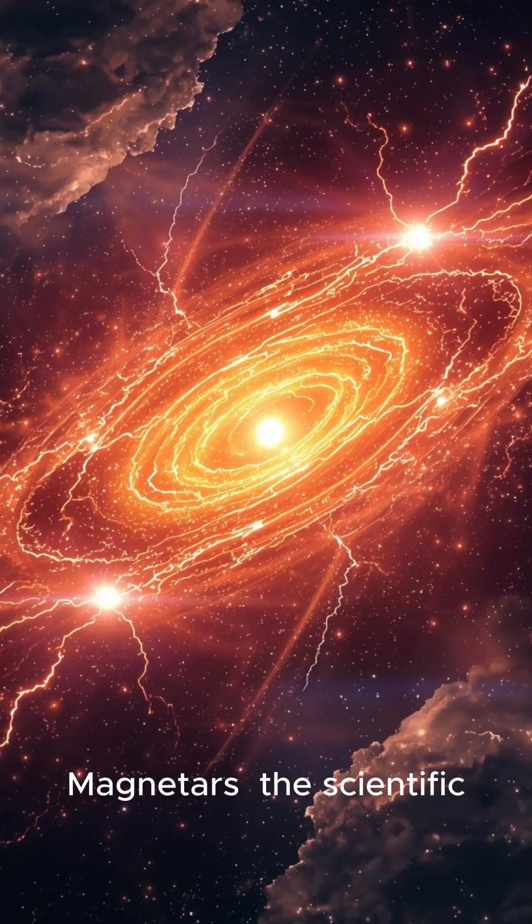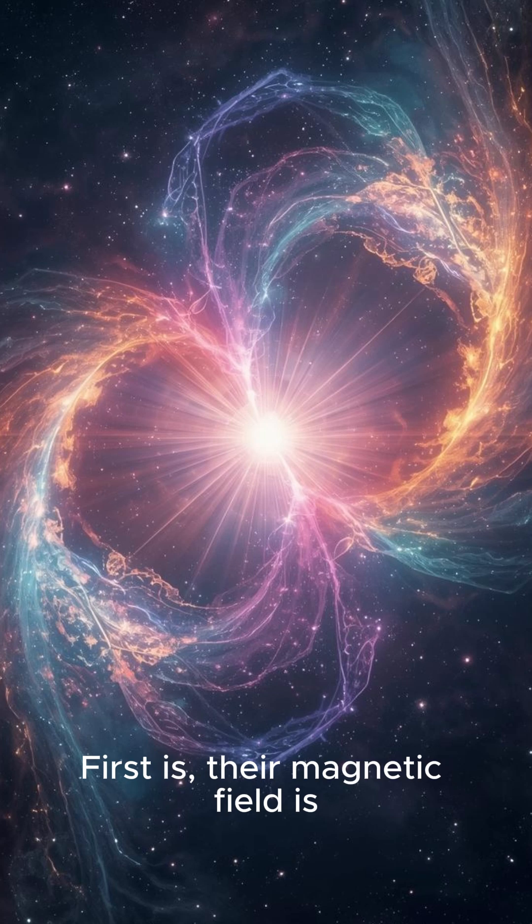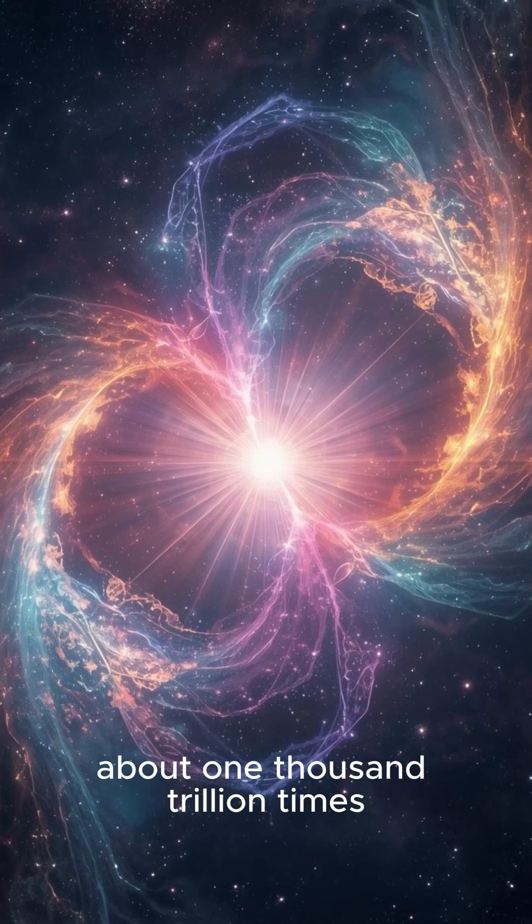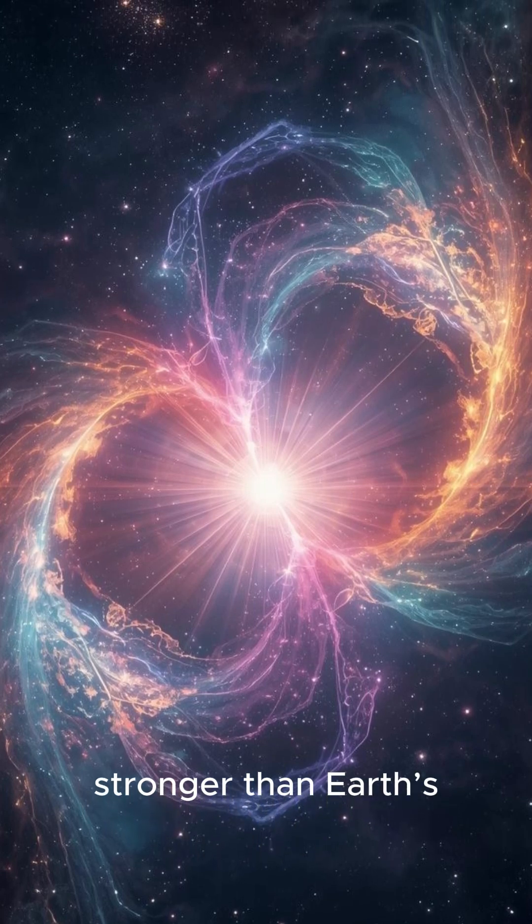Magnetars: the scientific oddballs of the solar system. Here are five facts you didn't know about the most magnetic objects in the universe. First, their magnetic field is about 1,000 trillion times stronger than Earth's.